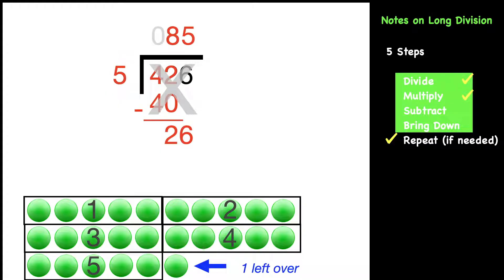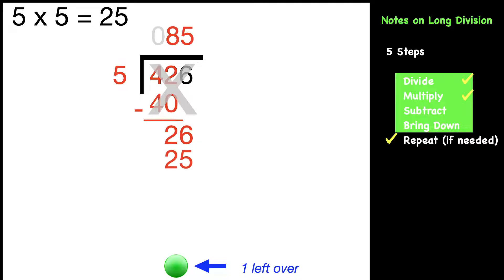Next, we're going to multiply the divisor of five times our quotient of five. Remember, just the five, not the 85. Five times five equals 25. That 25 goes below the 26. And now we're ready to subtract. 26 minus 25 is one. And there's nothing else to bring down. Remember, that one is our one left over. That's called the remainder.